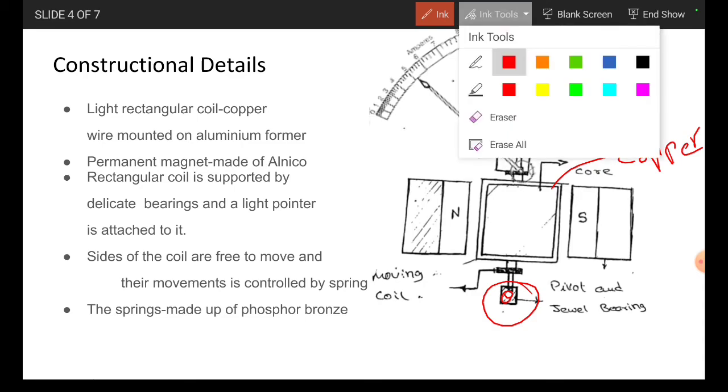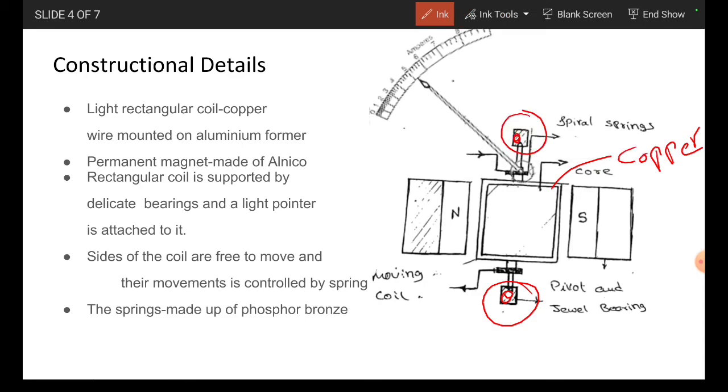In the top of the coil, we are placing one spring, and at the bottom of the coil, we are placing a second spring. This whole arrangement is placed in a permanent magnet, north pole and south pole. A light pointer is attached on this moving system. The sides of the coil are free to move and their movement is controlled by springs. The springs are made up of phosphor bronze.